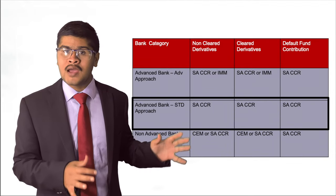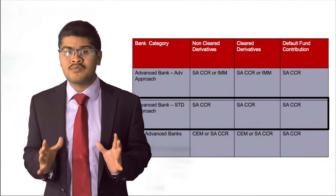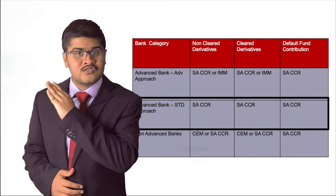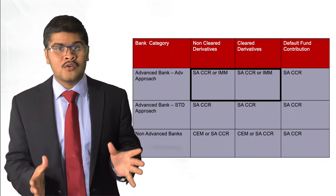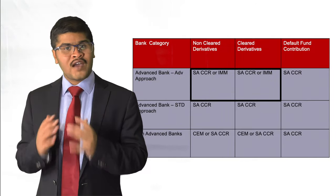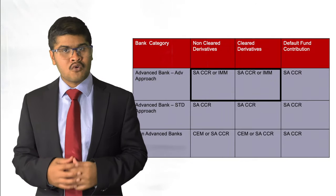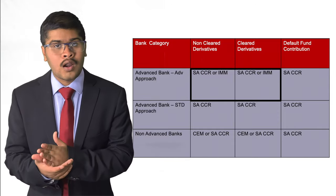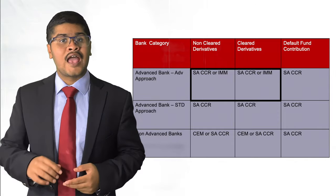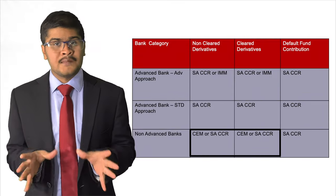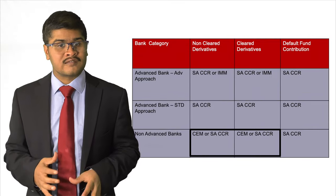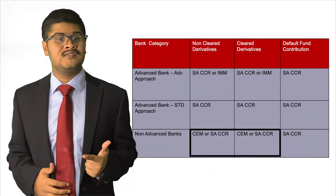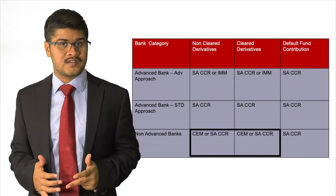If you look at the middle row, for advanced banks and STD approaches, it is again SA-CCR irrespective of the derivative product. If you look at the top row, for advanced banks and their advanced approaches, banks have the option to use either SA-CCR or IMM approach for cleared and non-cleared derivatives. Similarly, for non-advanced banks, banks have the option to use either CEM or SA-CCR for cleared and non-cleared derivatives.